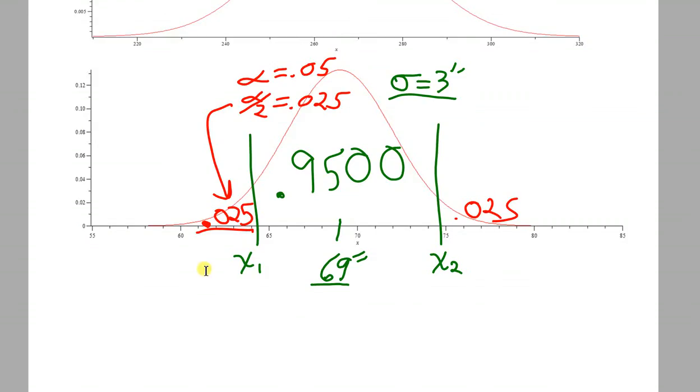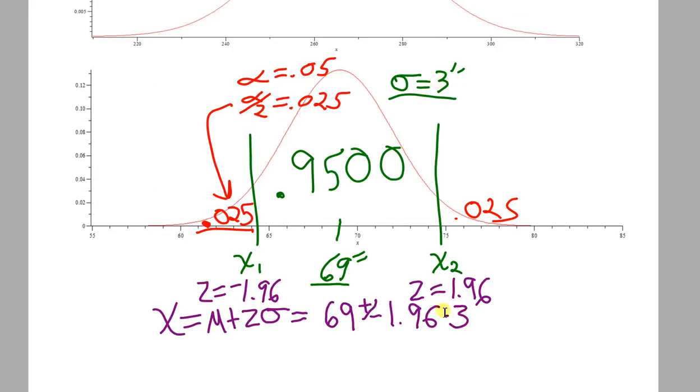Now we just need to find those two x's. Just like we did before, we want to use this formula, x equals the mean plus z times the standard deviation. We're just going to plug those numbers in. The mean is 69 plus and minus 1.96, because one of them is positive, one of them is negative, times the standard deviation, which is 3 inches, and 1.96 times 3 is 5.88 inches.